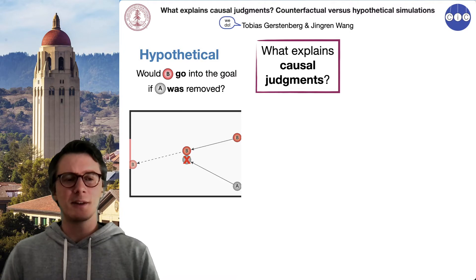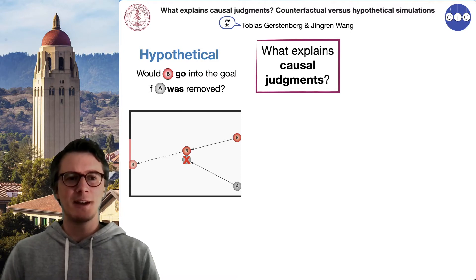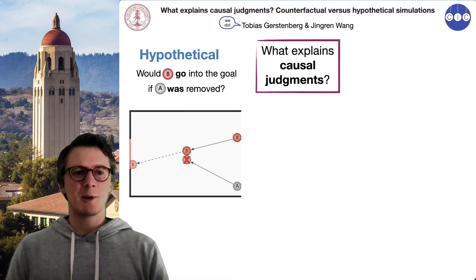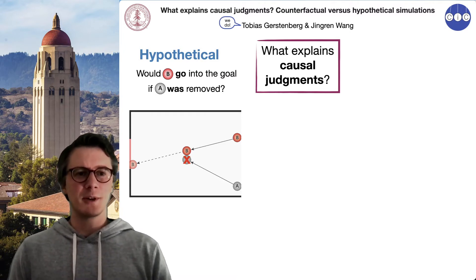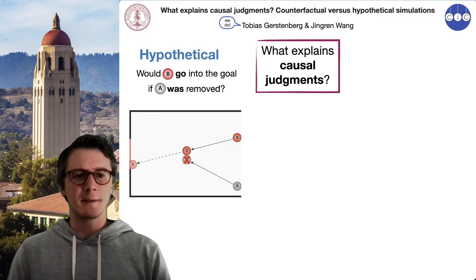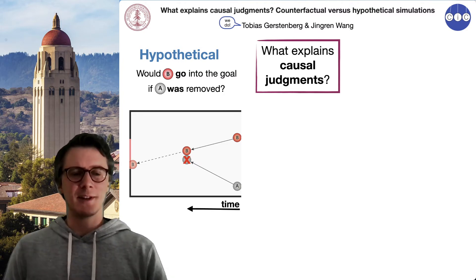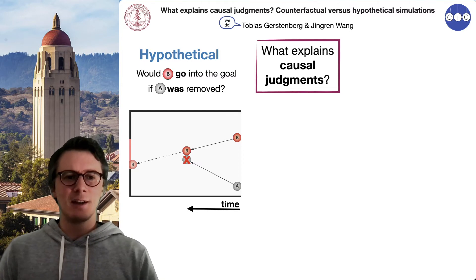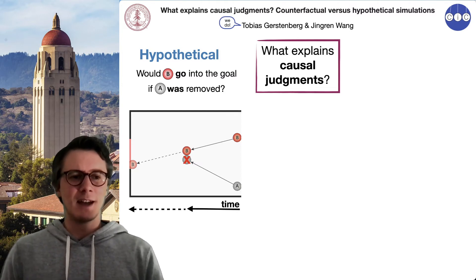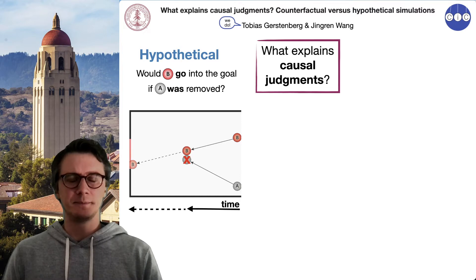A hypothetical is a thought about a possible future. For example, imagining whether ball B would go into the goal if A was removed from the scene — taking into account everything that happens up until the collision, removing A from the scene mentally, and then simulating what this hypothetical future would look like.